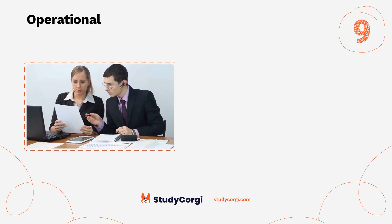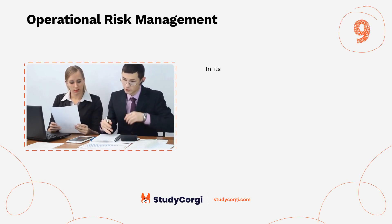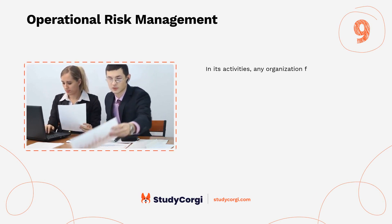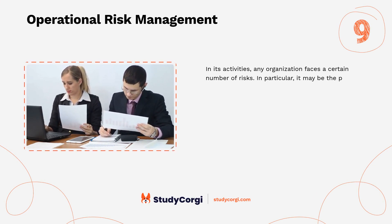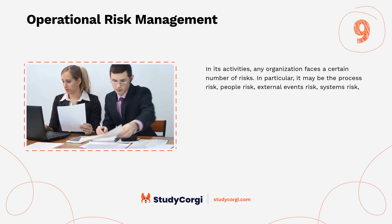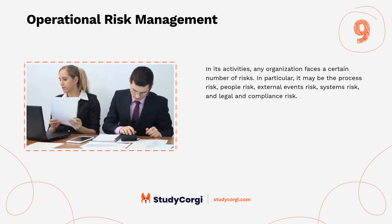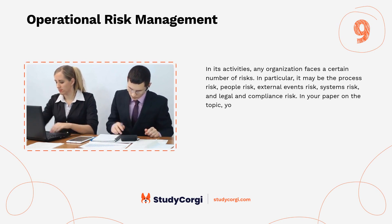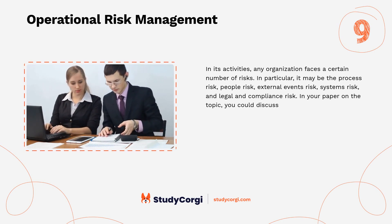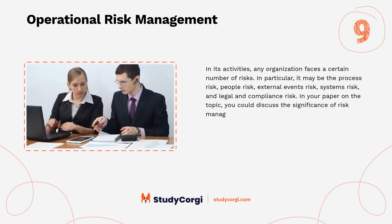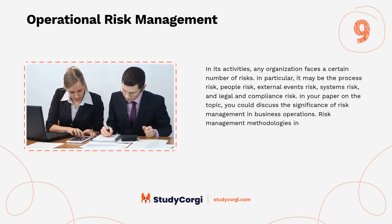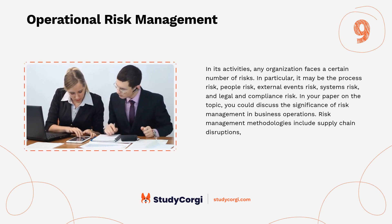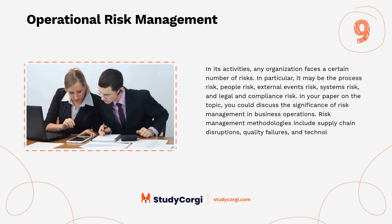Operational Risk Management. In its activities, any organization faces a certain number of risks — in particular, process risk, people risk, external events risk, systems risk, and legal and compliance risk. In your paper, you could discuss the significance of risk management in business operations. Risk management methodologies include supply chain disruptions, quality failures, and technology vulnerabilities.